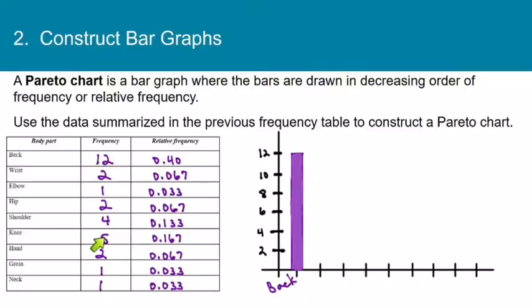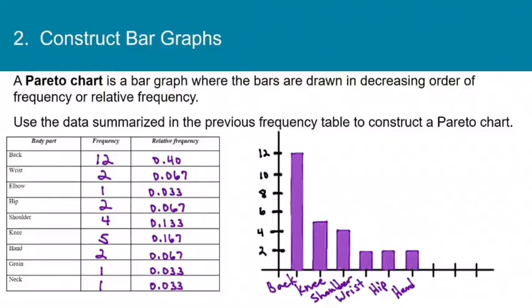Now I know that the tallest bar was 12. So I'm going to do that one first. And that's the back category. And then after that, the next largest category is the knee. And then the next tallest bar is the shoulder. After that, we have three bars that are tied. So the wrist, the hip, and the hand all were two units tall. So I'll draw three bars that are all two units tall. And the order here doesn't really matter. You could put these in any order because they're all the same height. And then the last three are elbow, groin, and neck. So notice that our Pareto chart goes from tallest bar to smallest bar. And that's the only difference between a Pareto chart and a regular bar graph.